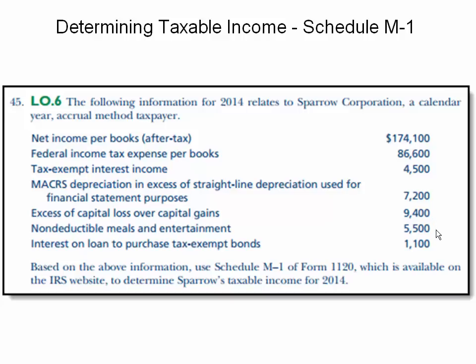There was a non-deductible meals and entertainment amount of $5,500 that we see on Sparrow's books. And interest on a loan to purchase tax exempt bonds was $1,100. Now based on that information we're to use Schedule M1 on Form 1120 and we're going to determine Sparrow's taxable income for 2014.